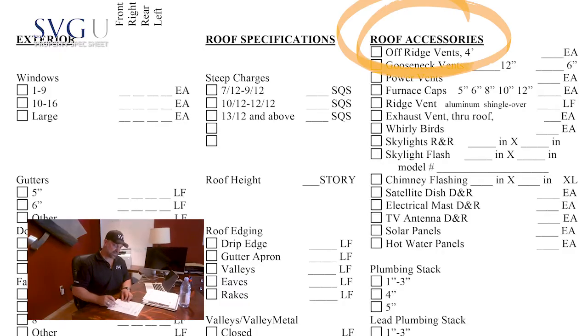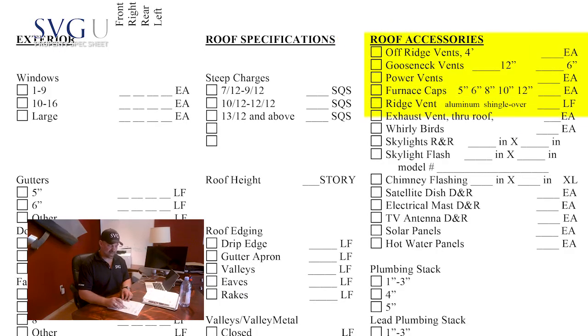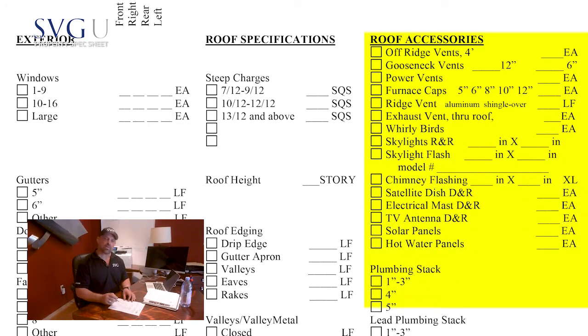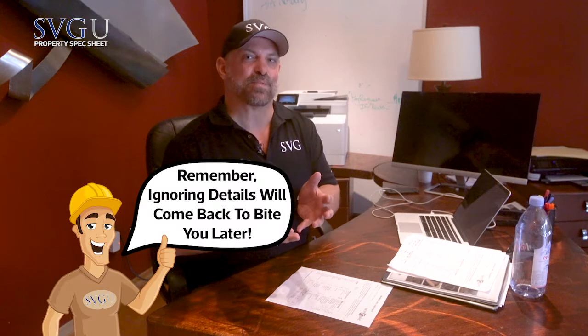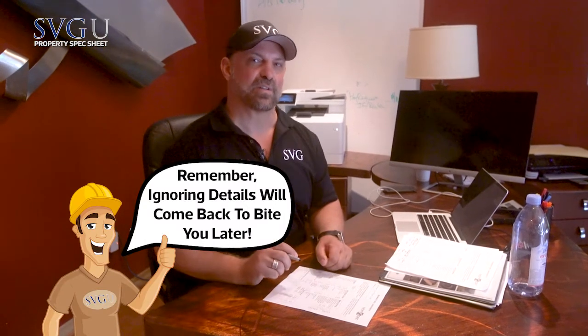Another big area is roof accessories — power vents, furnace stacks, four-foot off-ridge vents, furnace caps, whirly birds, skylights — all this kind of stuff is difficult to see on that satellite image report. If you don't mark them down, not only can you not estimate or supplement for those items, but your production manager later on is going to order the wrong vent systems, causing a trip charge and a roofer to stop production and someone to go back out to that job site several times, which is a real pain.